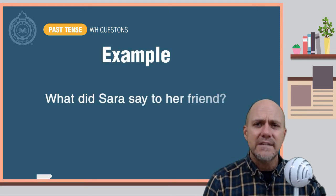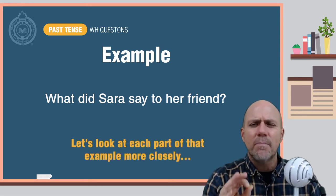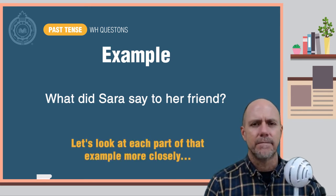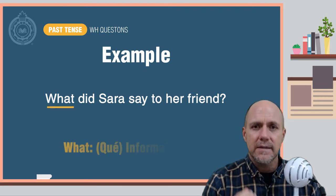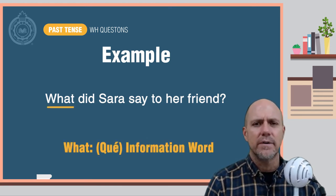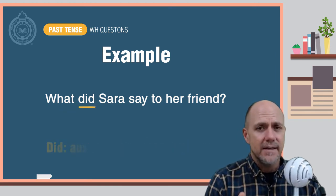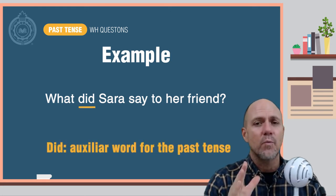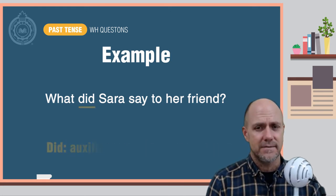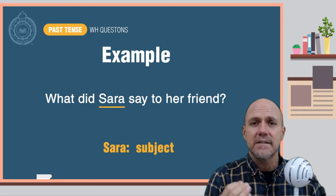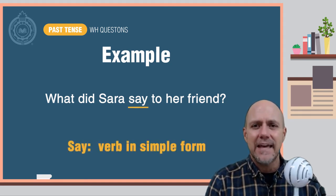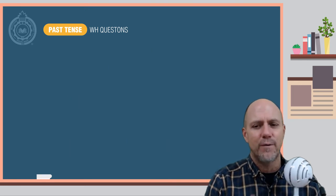What did Sarah say to her friend? Now let's look at each part of that example more closely. We begin with WHAT, the information word, plus DID — the auxiliary word to indicate we are speaking in the past tense — plus the subject Sarah, plus the verb 'say' in its simple form.